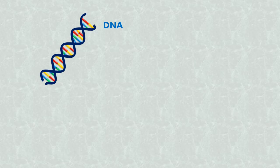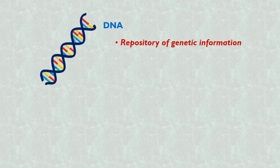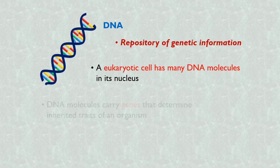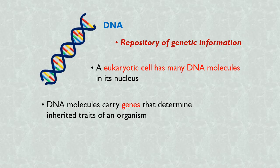We know that double-stranded DNA molecules present in the cells of organisms are the repository of genetic information. A eukaryotic cell has more than one DNA molecule in its nucleus. Each of these DNA molecules carries thousands of genes that determine an organism's inherited traits.